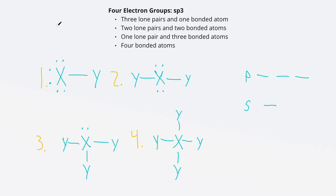Whenever an atom has four electron groups around it, that is going to be sp3 hybridized. The four pictures drawn here correspond to four bullet points, and each one has four electron groups — just different combinations of lone pairs and bonded atoms. You don't need to memorize these four combinations; you should be able to think through and draw these images on your own once you understand electron groups.